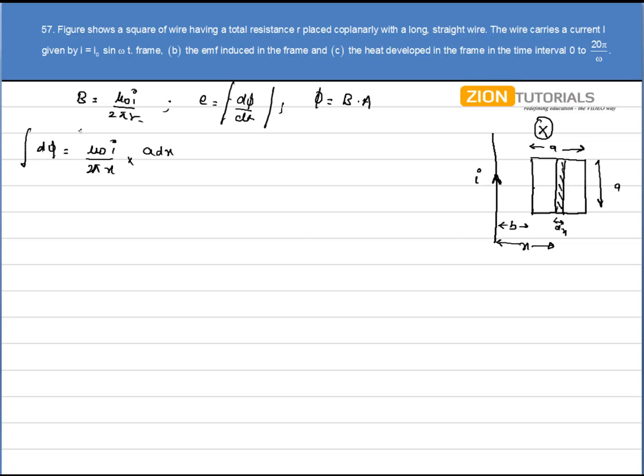Integrating both of them the value of x varies from B to A plus B. So we have mu not i A by 2 pi. Natural log of A plus B. So on solving this I get the total flux. I have mu not i A by 2 pi natural log of A plus B by B.